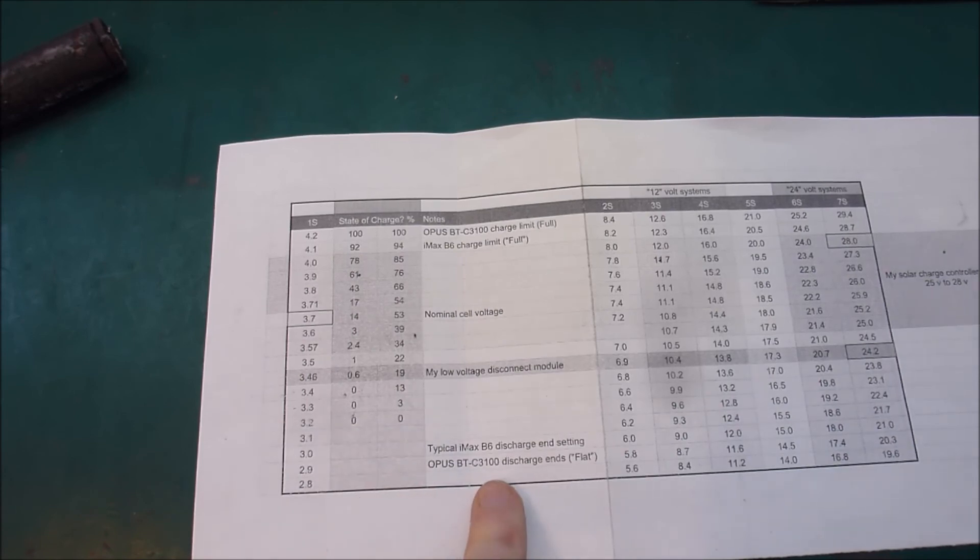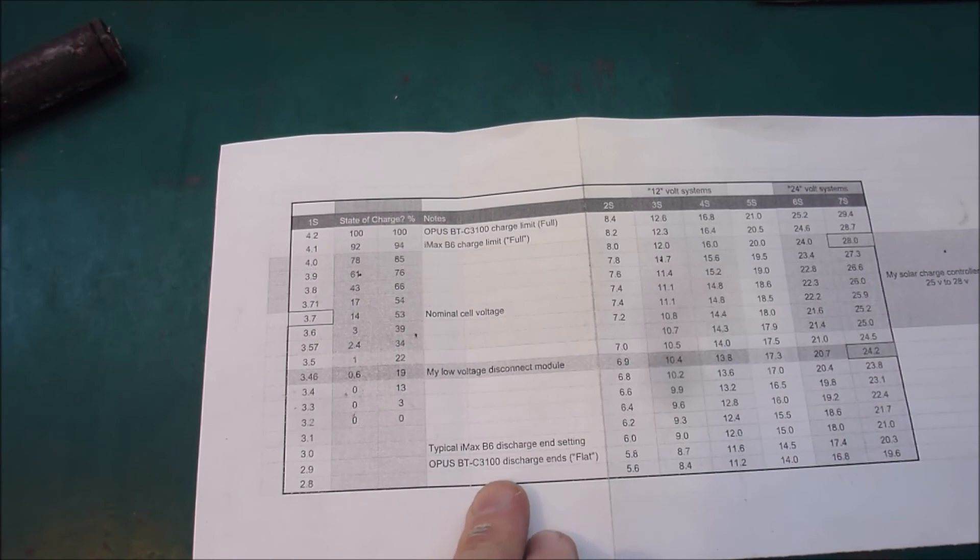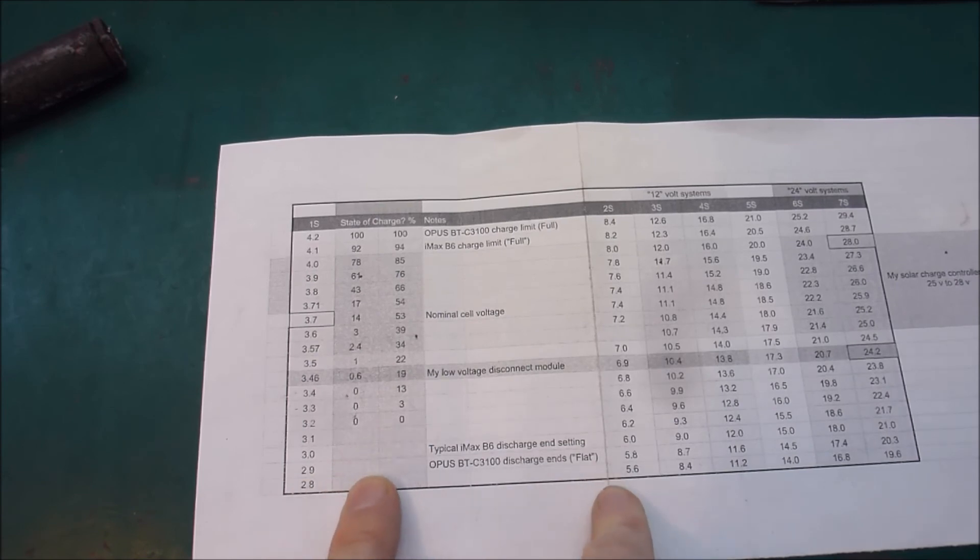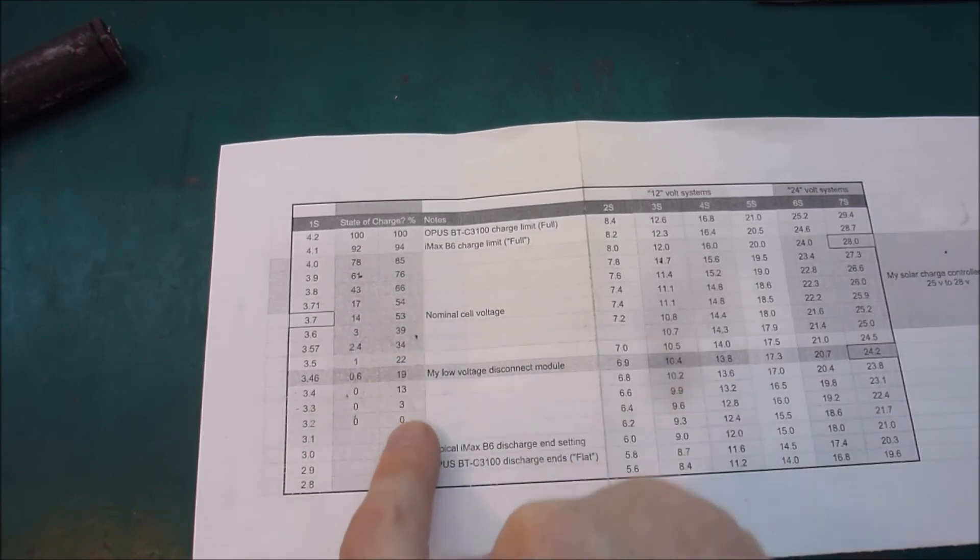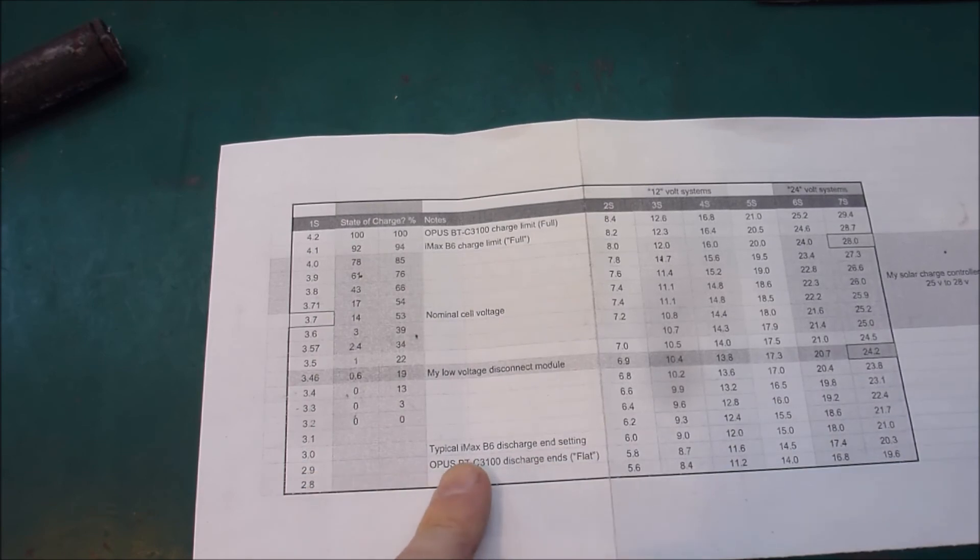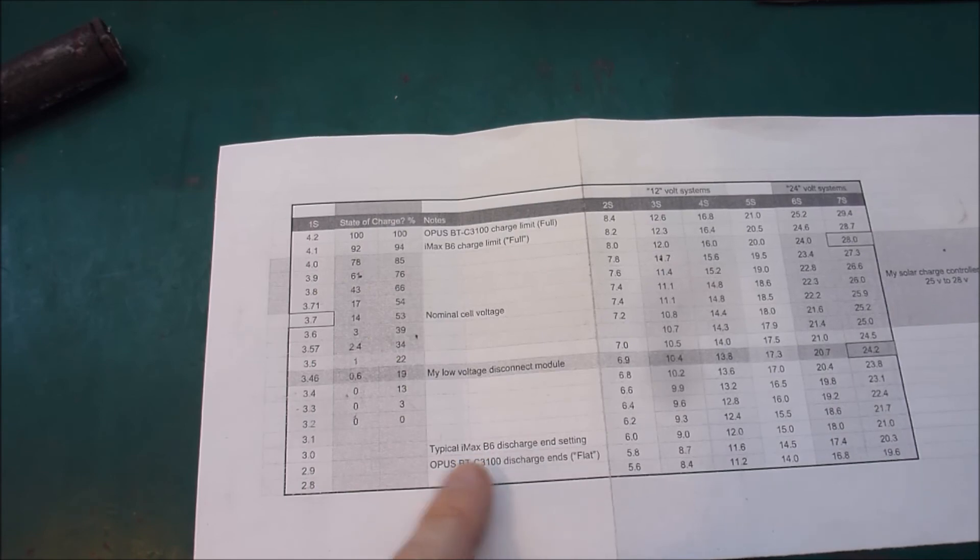The other interesting thing to note is that the Opus BT-3100 will discharge down to 2.9 volts which is way below zero for these cells. So that's a wee bit disconcerting. An IMAX V6 is typically set to 3 volts. I think you can change that in the settings. I haven't played with an IMAX V6 for so long I can't remember.